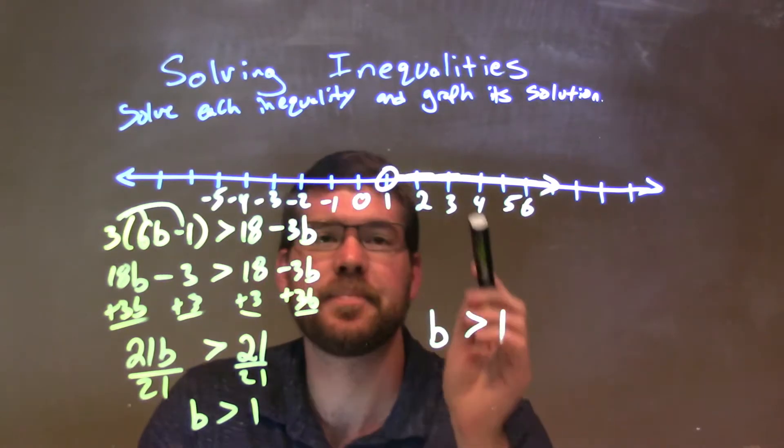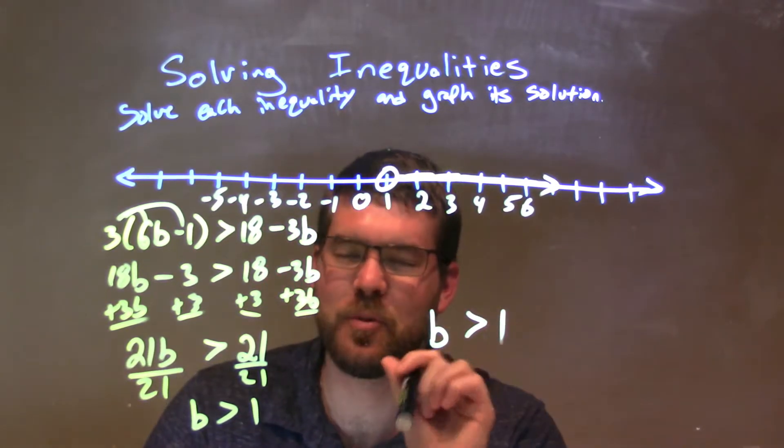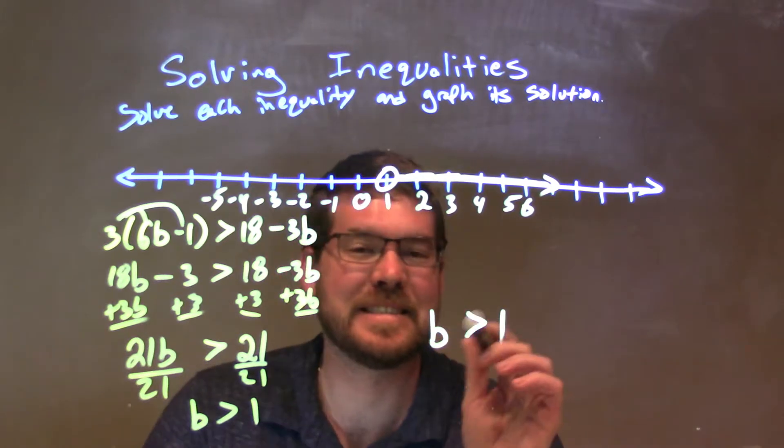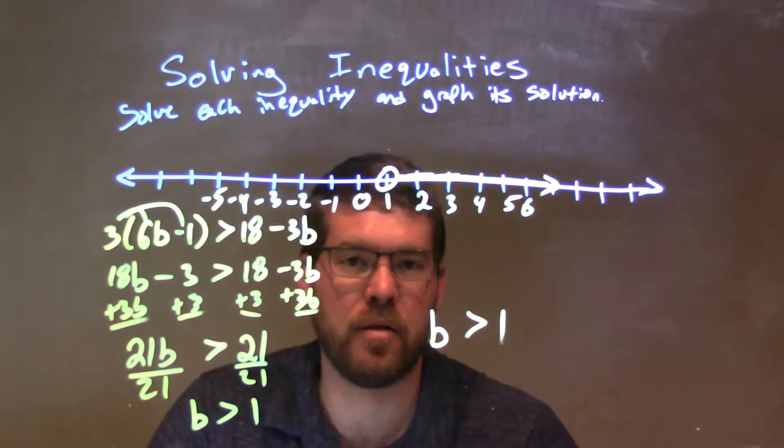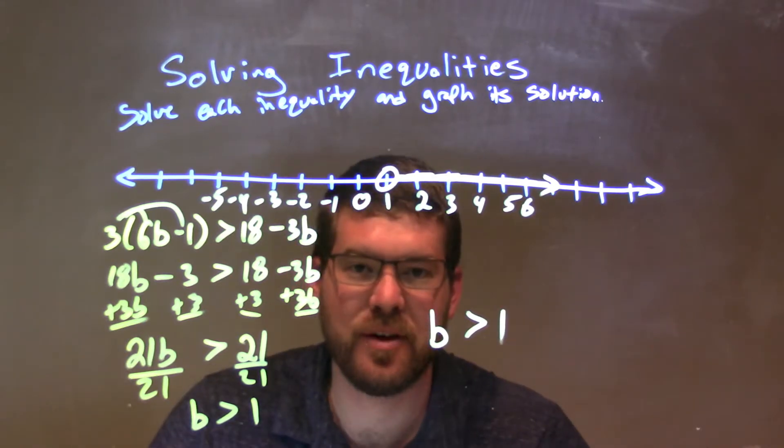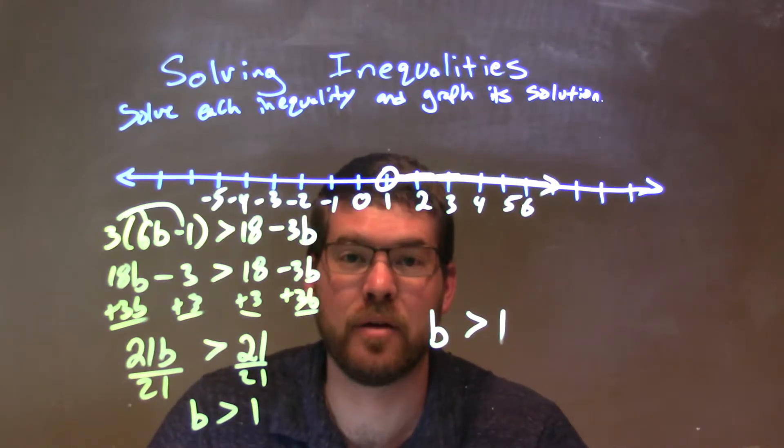So to graph that, open circle at 1 right there. No, it's just 1, right? Open circle at 1 because it is not equal to 1, just greater than. I wish we had it to the right because it's greater than. So, again, our final answer here is just b is greater than 1.